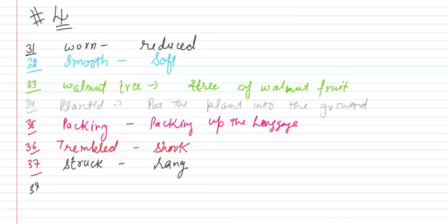After that, 38 is trumpets. Trumpets means horn-like wind instrument. Trumpets means horn, horn bajana jaise ki ek wind instrument ho, like wind instrument. Thik hai.